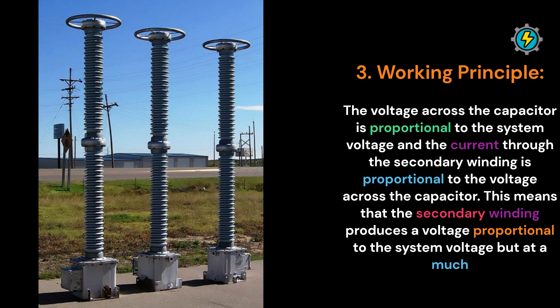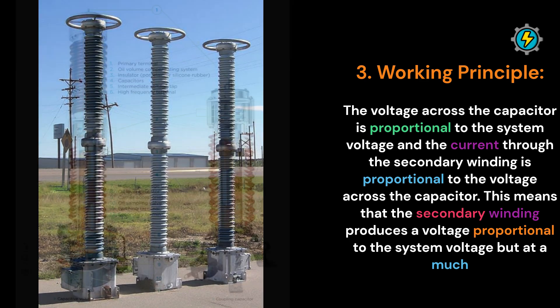Working Principle: The voltage across the capacitor is proportional to the system voltage, and the current through the secondary winding is proportional to the voltage across the capacitor. This means that the secondary winding produces a voltage proportional to the system voltage but at a much lower level.